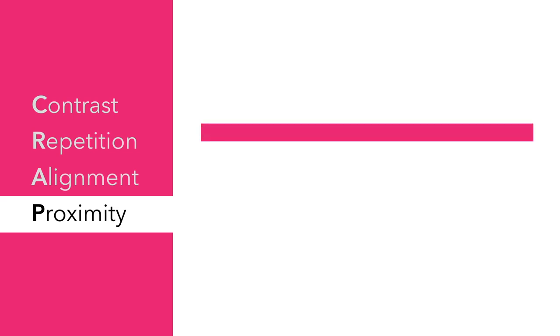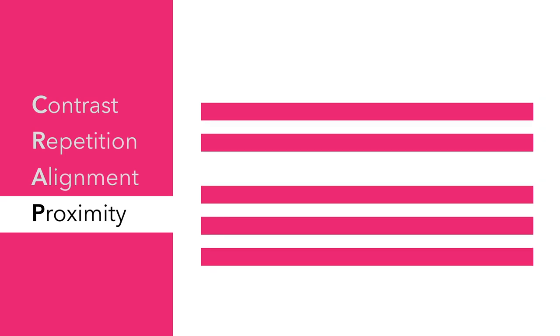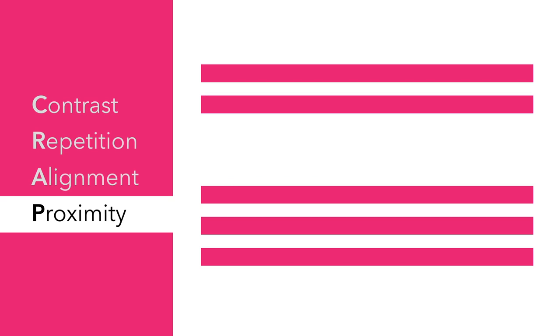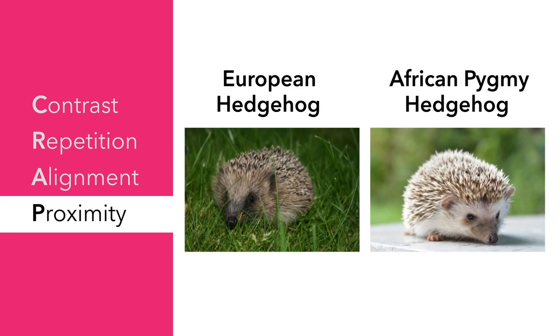Finally, P is for Proximity, which deals with the distance between elements in our design. Through proximity we can create visual relationships that lead to an easier understanding of materials. Things that are close to each other will automatically feel more related. Proximity can also remedy some confusion — for example, when captioning images it's important to keep the text in close proximity to the image. Being intentional with captions makes sure that the audience can easily follow the information you're presenting. You never want to give your audience an opportunity to misunderstand you.